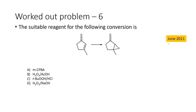Let us move on to the next problem, which appeared in June 2011. The suitable reagent for the following conversion — an alkene converted into an epoxide — is to be identified. Four reagents are given: (1) MCPBA (metachloroperoxybenzoic acid), (2) hydrogen peroxide in the presence of acetic acid, (3) tert-butyl hydroperoxide in the presence of hydrochloric acid, and (4) hydrogen peroxide in the presence of sodium hydroxide.